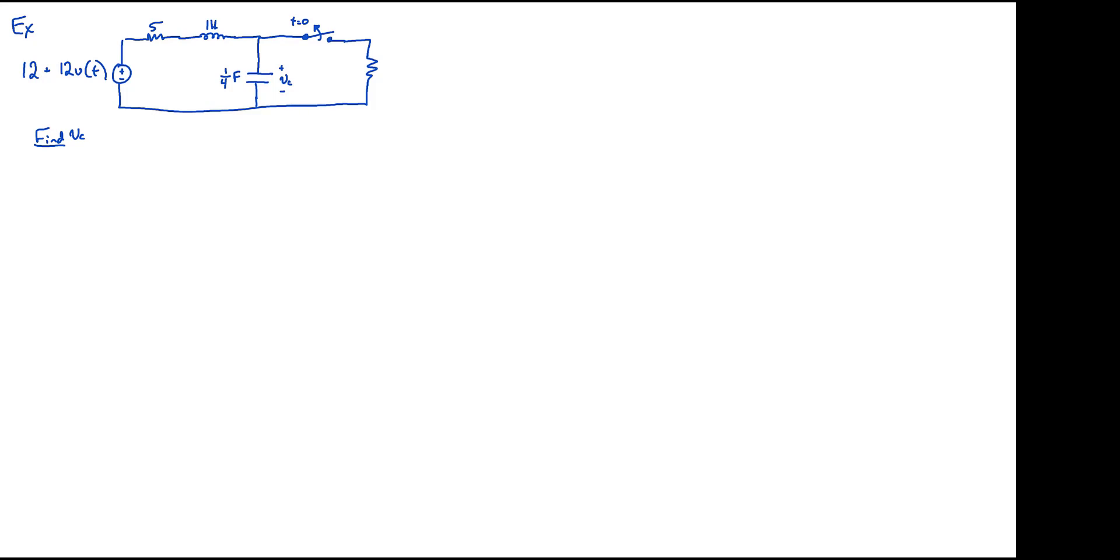So the very first step, just outlining our steps in general, first step is going to be finding those initial conditions. Step A is going to be to draw it for time less than zero. And our goal is to find two things when we draw it for time less than zero. What are those two things we want to find? I sub L and V sub C. That's right. No matter what we're asked to find, we're going to find those two.